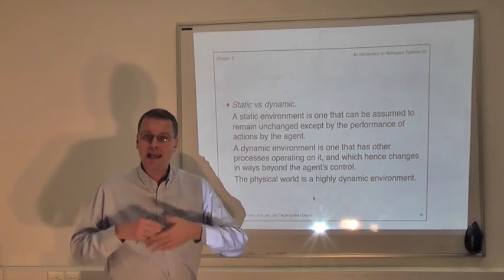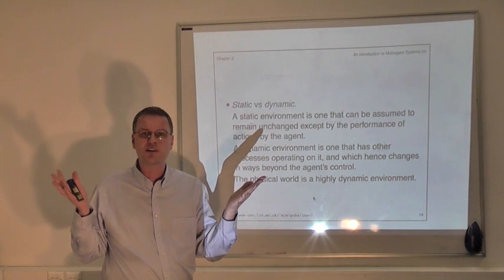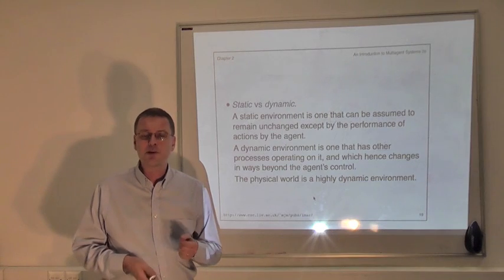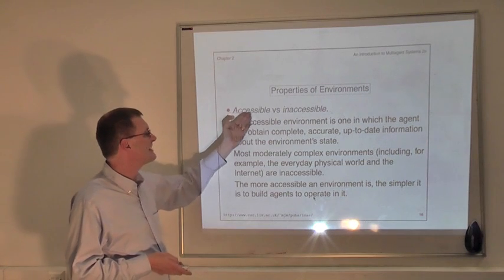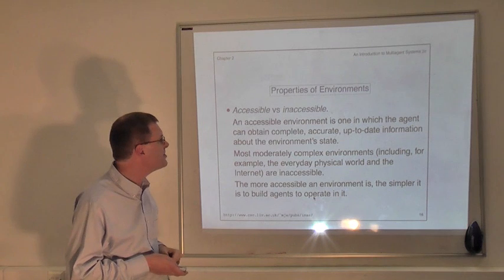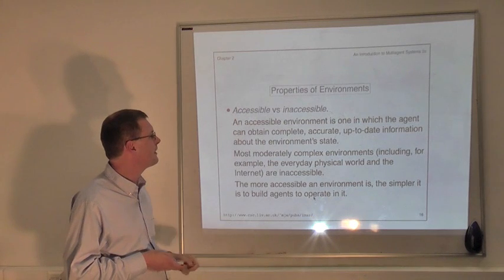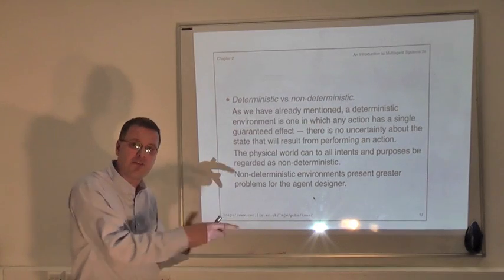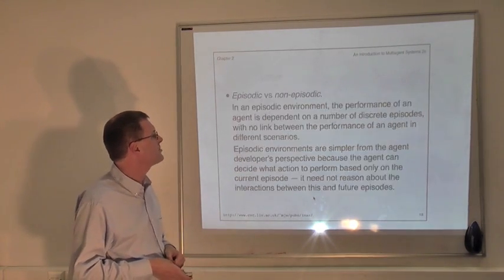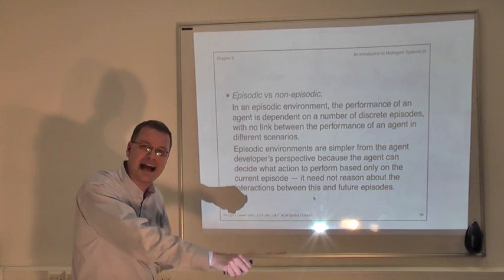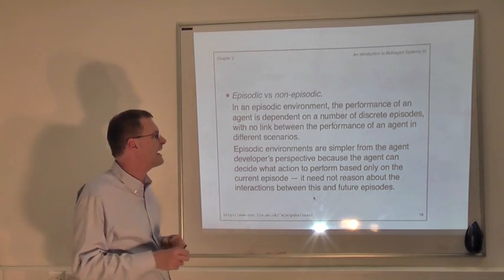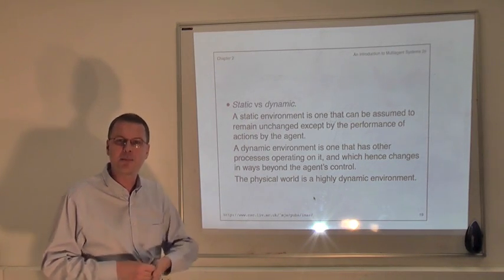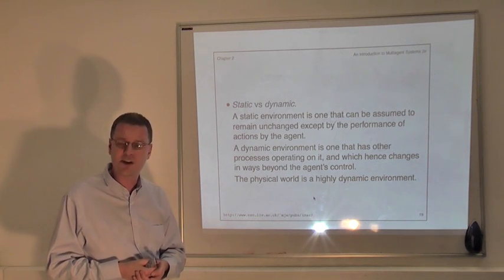To summarise: in general, we have environments that could be the physical world, where robots operate, or virtual environments such as operating systems and computing networks. And we have this classification scheme: accessible versus inaccessible, relating to the information you can get about the environment; deterministic versus non-deterministic, whether actions have a single effect or multiple possible effects; episodic versus non-episodic, whether you have to worry about how current actions will interfere with future ones; and finally, static versus dynamic, whether you are the only actor in the environment or whether there are other processes and agents operating upon it.